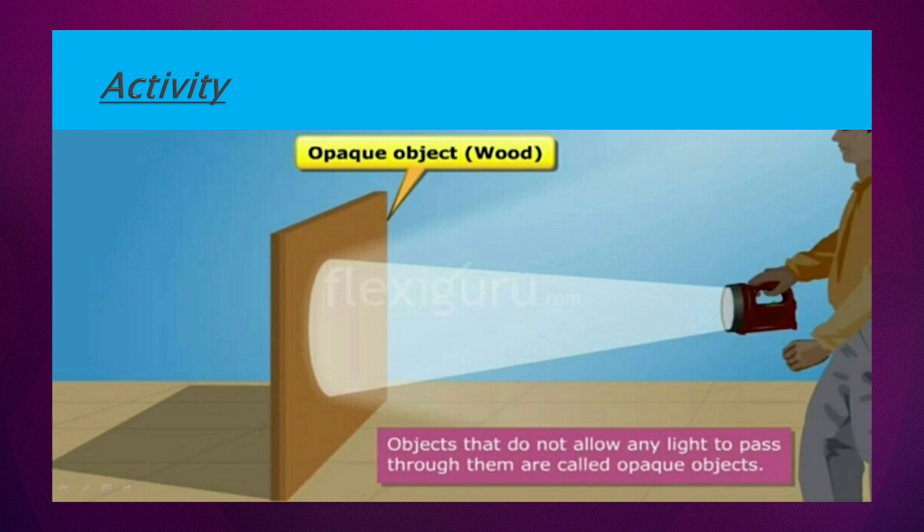Jaise ke wood hai aapka, ya aapke cardboard hai, aapka blackboard tha, school mein jo aap dekhte the, they are all opaque objects. Examples of opaque objects.